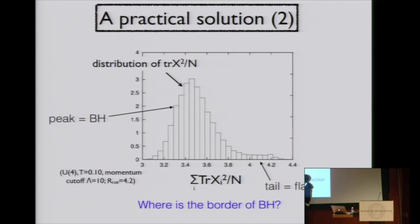Here we see the tail. Our cutoff value is here. So here we don't have any configuration. But here we see the tail, which means eigenvalues are trying to run away from black hole. It's not clear where the border of black hole. It should be around here, but it might be around here.